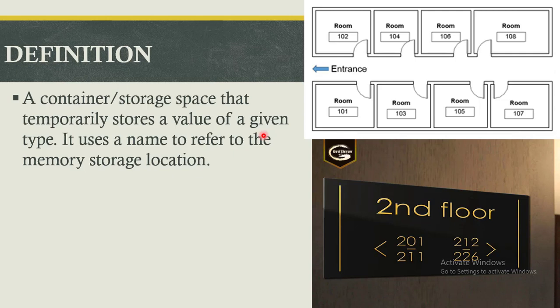When a hotel room has been assigned a number, it becomes pretty easy for the management to assign you a particular room, and they're able to know which room has been occupied and which room is vacant. Similarly, if the management needs to access you, they only need to know which room number you are in. So what's a variable? A variable is simply a container or a storage space that temporarily stores a value of a given type.